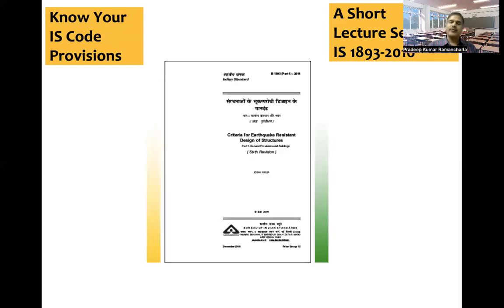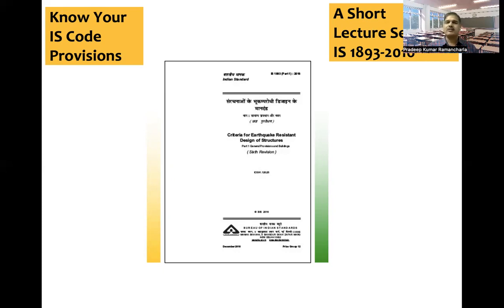In this short lecture series, I have taken each clause of IS 1893 and tried to explain it word by word, sentence by sentence, and the overall meaning of the clause. Wherever possible, I have taken examples to make it simple and crisp. Each clause is dealt with briefly yet in a little more detail.